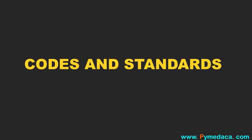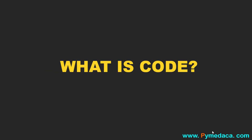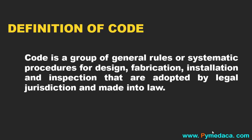Now let us see what is code. By definition, code is a group of general rules or systematic procedures for design, fabrication, inspection, and installation that are adopted by legal jurisdictions and made into law.